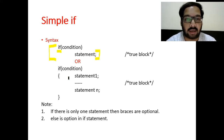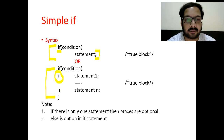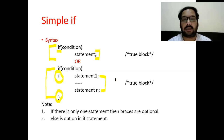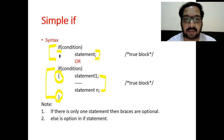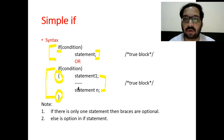In the second syntax, we use curly braces. Here we can have statement 1 to n. The difference is: curly braces are optional when there is only one statement in the true block. But if there are more statements, you must group them inside curly braces.